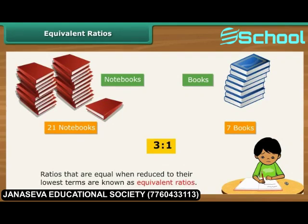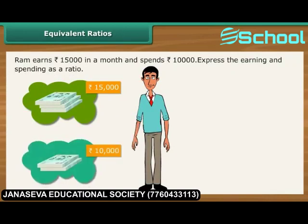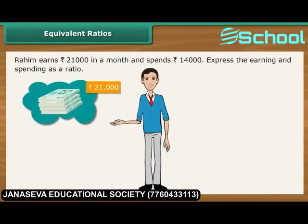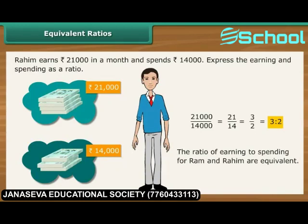Let us verify whether the following ratios are equivalent. Ram earns Rs. 15,000 in a month and spends Rs. 10,000. The ratio is 15,000 by 10,000, which is 15 by 10, reduced to the lowest term: 3 is to 2. It means that out of every Rs. 3 earned, Ram spends 2. Raheem earns Rs. 21,000 in a month and spends Rs. 14,000. The ratio is 21,000 by 14,000, which is 21 by 14, reduced to the lowest term: 3 is to 2. It means that out of every Rs. 3 earned, Raheem also spends 2. The ratio of earning to spending for Ram and Raheem are equivalent.